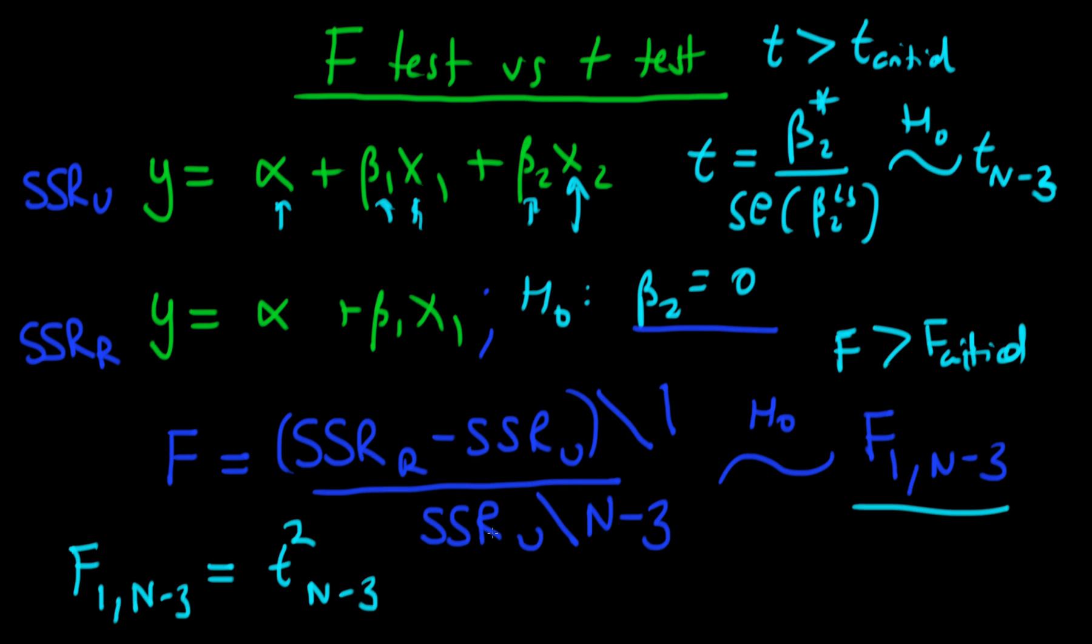Normally when we are just testing for significance of one particular coefficient, we use the T test because there's nothing to be gained by using the F test, and the T test is simpler because we don't need to run this secondary auxiliary regression.